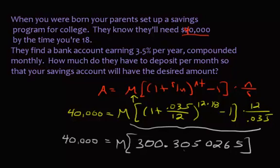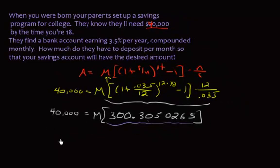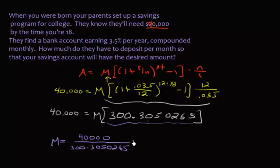So to solve for your monthly payment, you're going to divide both sides by this 300 and change. So M is going to equal $40,000 divided by 300.305 and so on, and you're going to get $133.20.